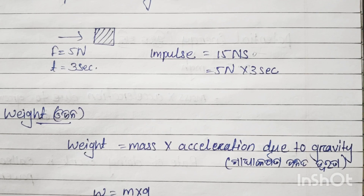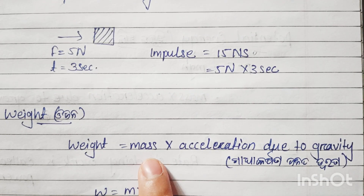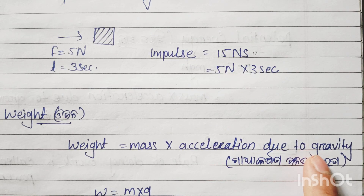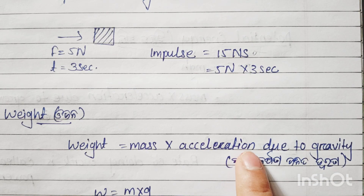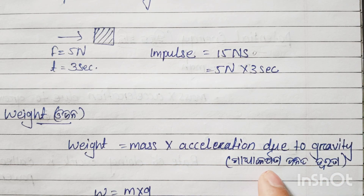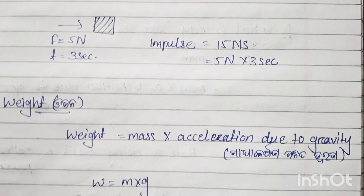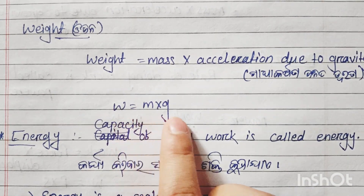Weight means mass into acceleration due to gravity. Weight equals m into g, where g is acceleration due to gravity.